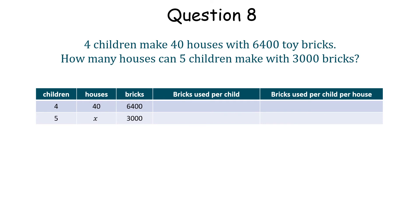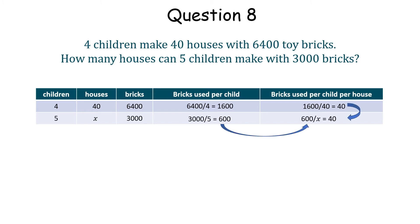6,400 bricks are used by 4 children, so each child uses 1,600 bricks. The number of bricks used by each child for each house is 40. Now we have 3,000 bricks being used by 5 children, so they use 600 each. Therefore, making and solving a similar equation, if each child uses 600 bricks and that is shared into 40 bricks per house, then 15 houses are built by 5 children.